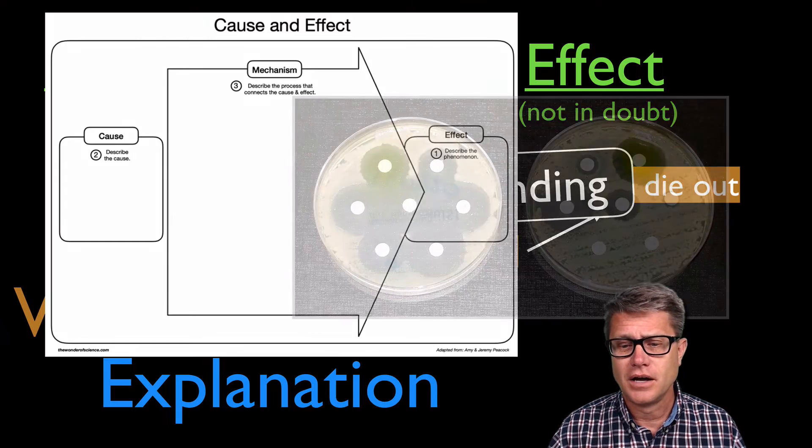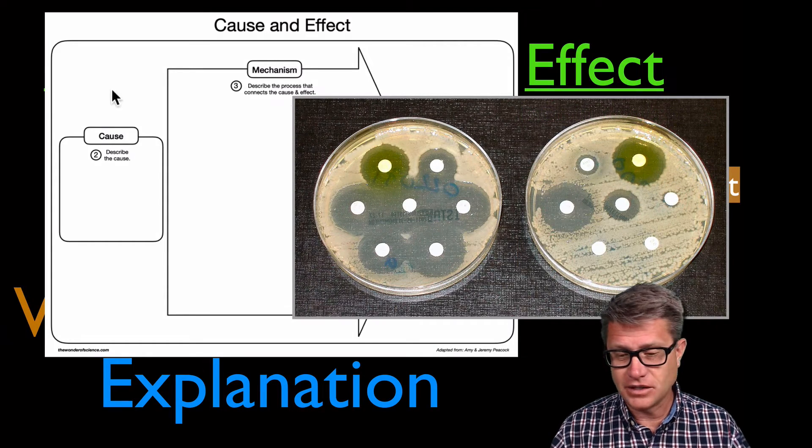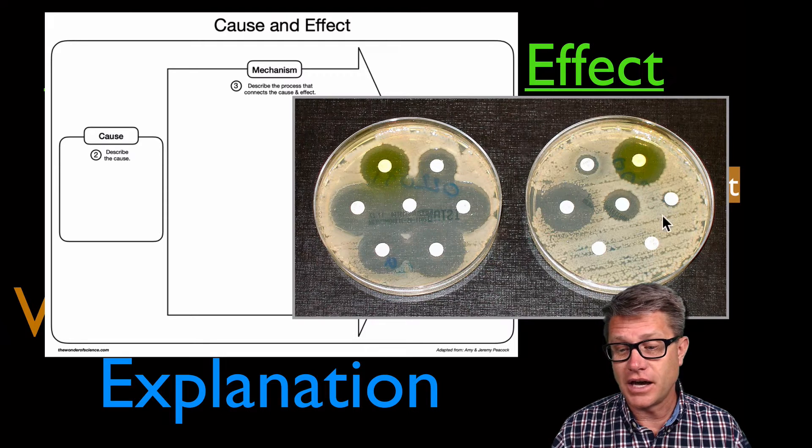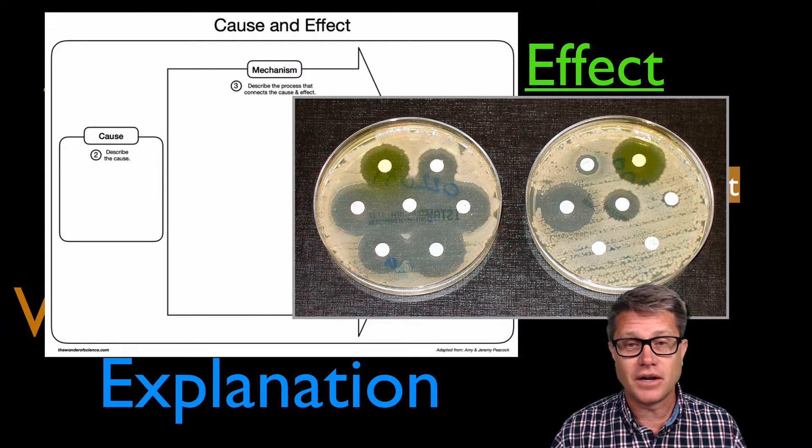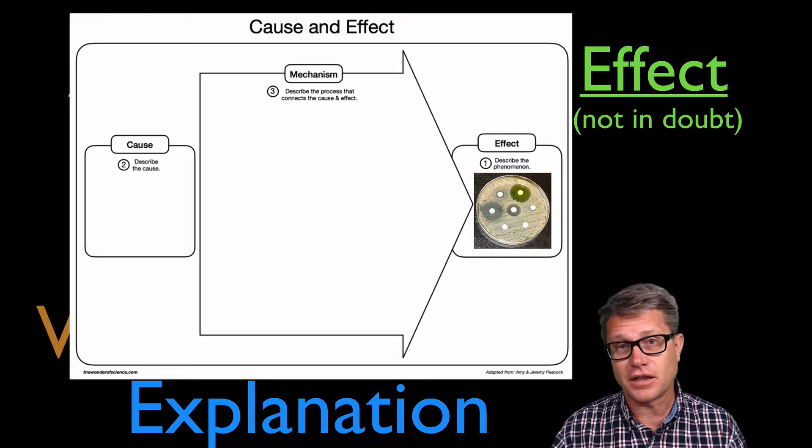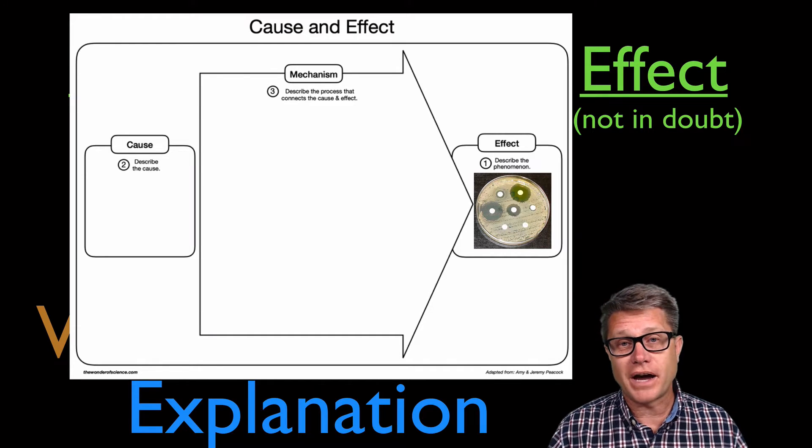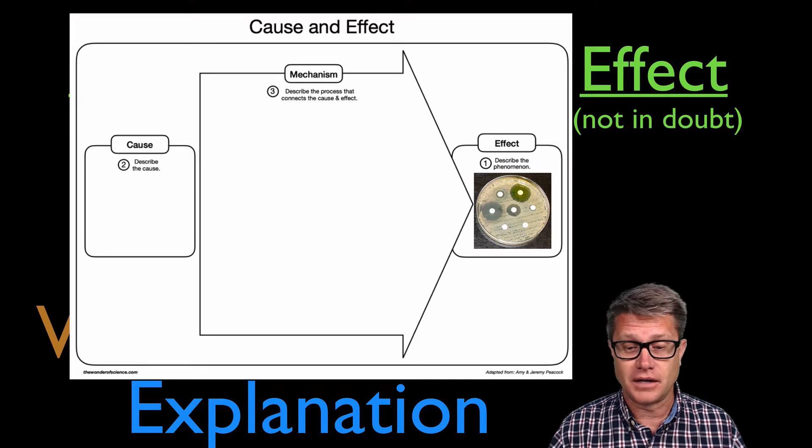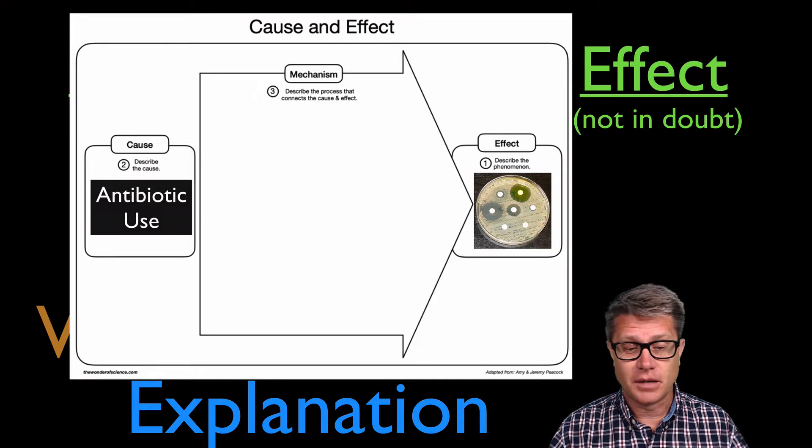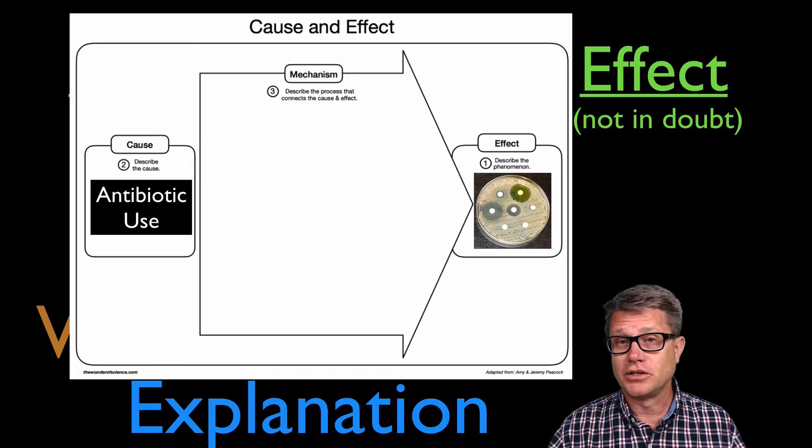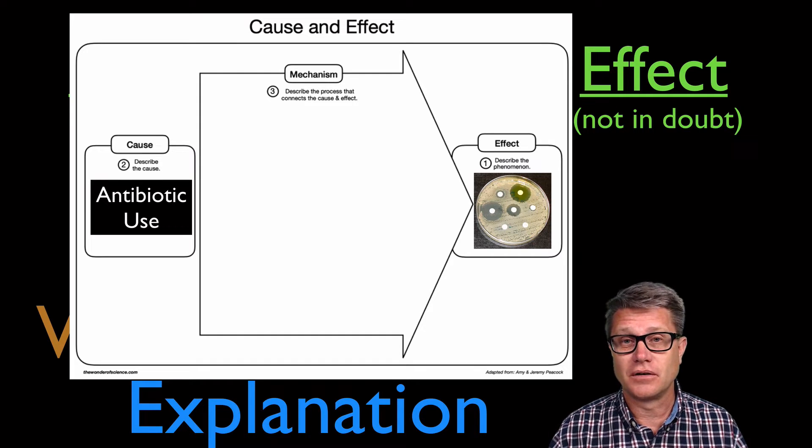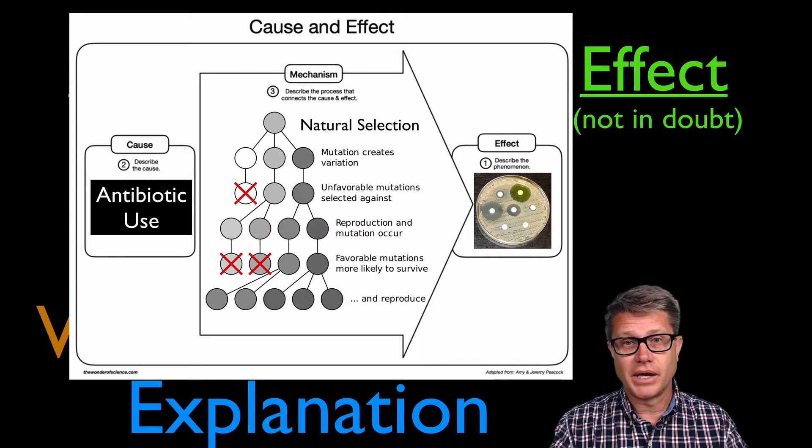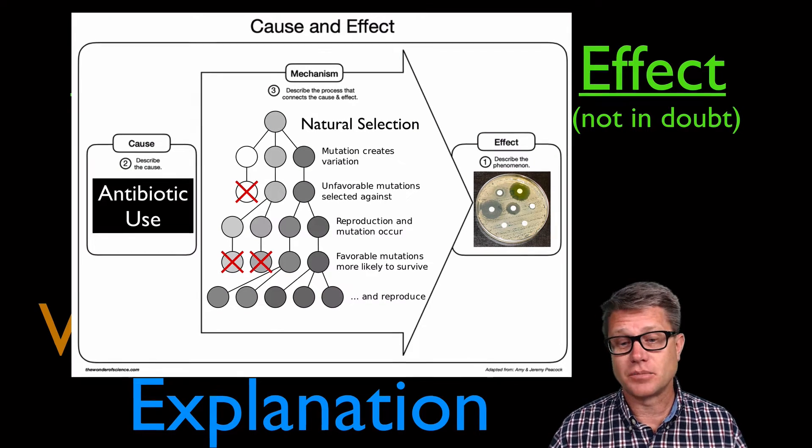So let's say we're looking at the phenomena of antibiotic resistance. So these bacteria in this petri dish are resistant to these three antibiotics. So that's going to be the phenomena, so we can put that in the effect. You always put the effect there first, and then we're going to work backwards to determine what's the cause and what's the mechanism. Now if I were to give you the answer, you've probably heard this before, antibiotic resistance is probably due to overuse and underuse of antibiotics. What's the mechanism? That's going to be natural selection. And so what do we have here? We have a coherent explanation.